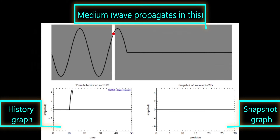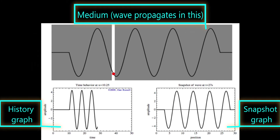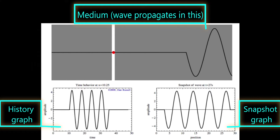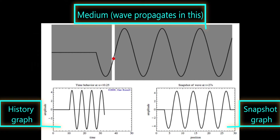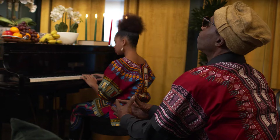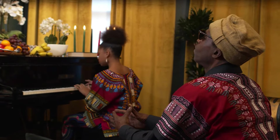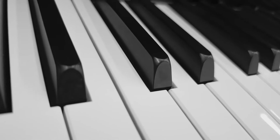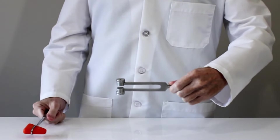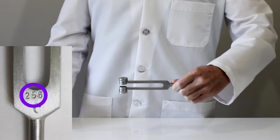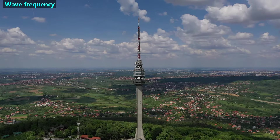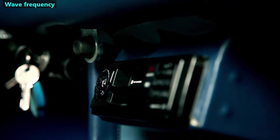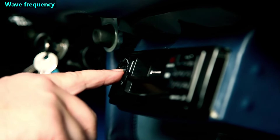To make a history graph, we plot the displacement from the equilibrium of one point in a medium over the course of several seconds. For example, this history graph corresponds to the activity of the red dot in the medium during several seconds. In contrast, a snapshot graph is a picture of all the waves in a medium at one instant in time. Most of the time, the wave frequencies we experience are high numbers. You may recognize this frequency as middle C on a piano. This tuning fork is making a sound with that same frequency — it does that by vibrating exactly 256 times per second. With every vibration, the tuning fork oscillates the air molecules back and forth to produce sound waves with that frequency.